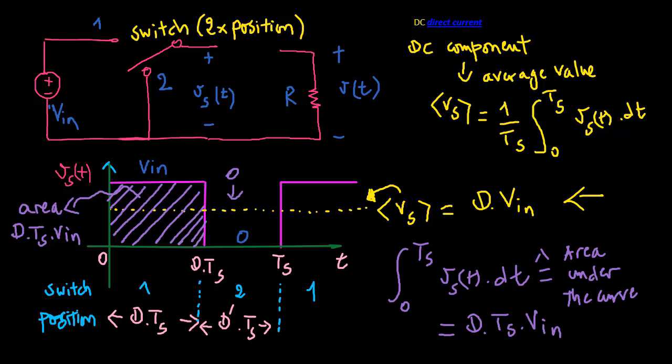So the average value, or DC component of VS, is equal to the duty cycle times the DC input voltage VN. The switch therefore reduces the DC voltage by a factor of D.